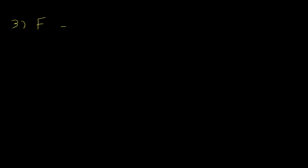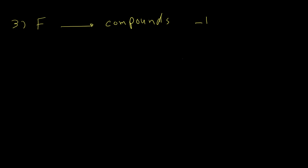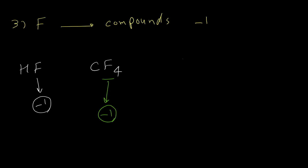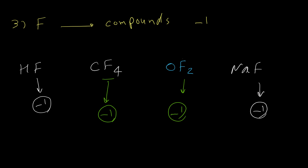Rule number 3 is about fluorine. Fluorine in all compounds has a -1 oxidation number. If we have F2, that falls under the first rule — it's in elemental form, so it's 0. But in all other compounds, fluorine is always -1. For example, HF: oxidation number for fluorine is -1. CF4: each fluorine atom is -1. OF2: each fluorine is -1. It doesn't matter if it's ionic or covalent — fluorine is always -1.